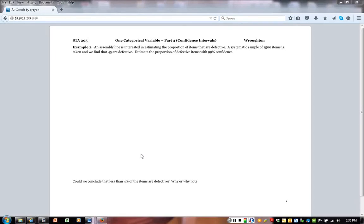Alright class, we're still in the one categorical variable part three notes on confidence intervals. In the last video we talked about the idea of what a confidence interval is and how the normal curve rule or that 68-95-99.7 rule can help us there. We're now going to do another example of doing a confidence interval.